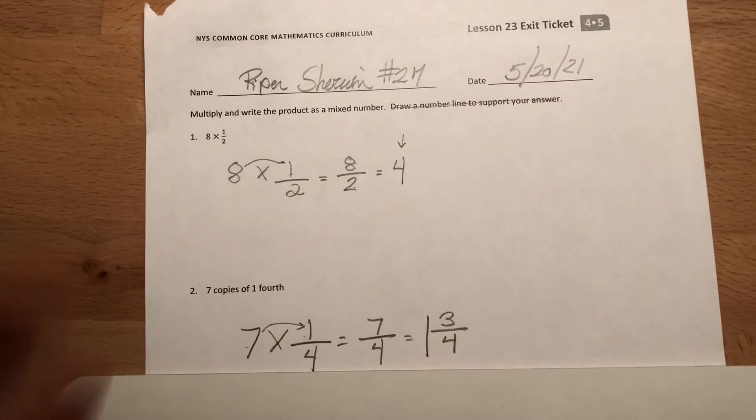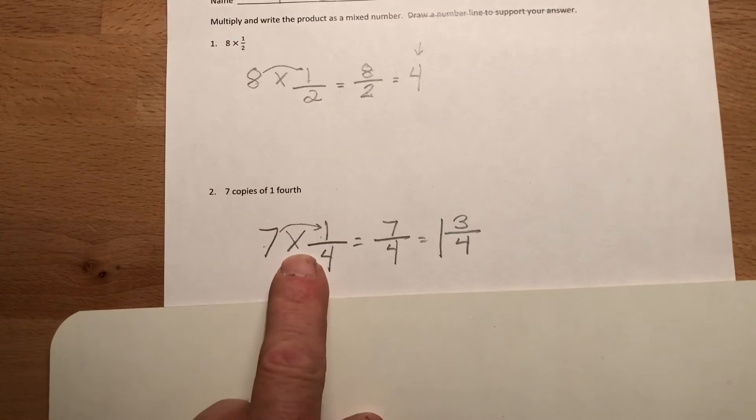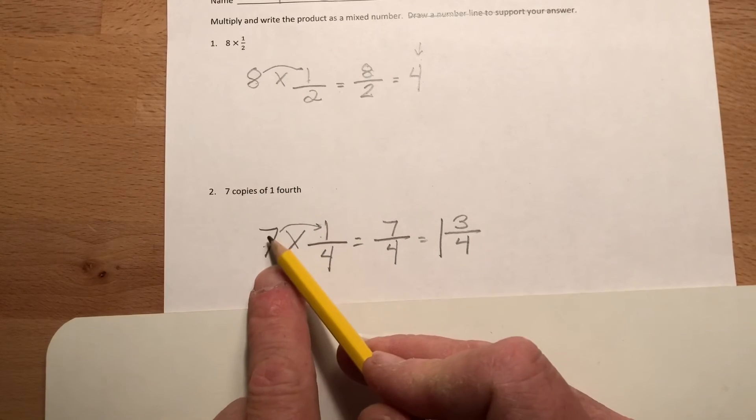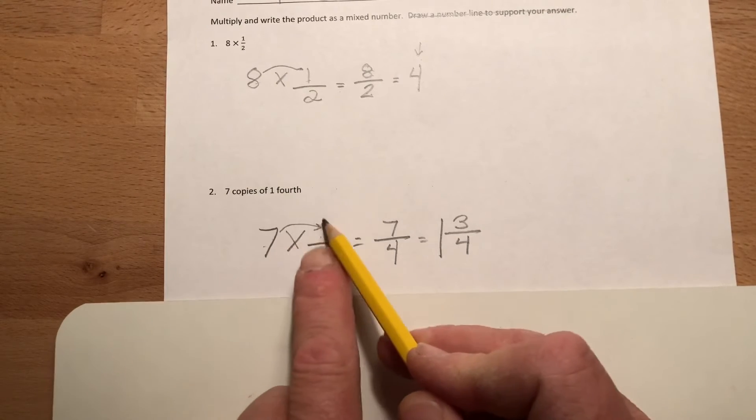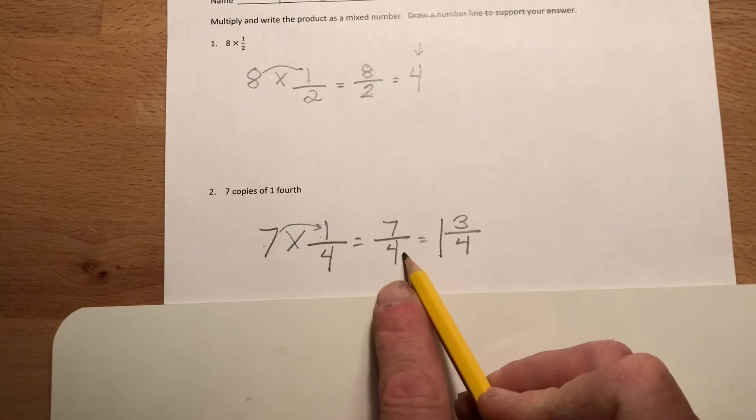Okay, so down here seven copies of one-fourth. I told you that copies of means groups of. Okay, so seven groups of one-fourth. I brought an arrow here because all I'm doing is multiplying the seven times that one, right? Seven times one is seven and we're dealing with fourths.